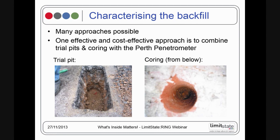Suppose we have to look inside our bridge — how do we do that? There are lots of ways: boreholes, trial pits, coring. One approach I've found very effective and cost-effective is to have a small number of trial pits and sometimes cores, used in conjunction with a very lightweight handheld penetrometer. For example, the PERF penetrometer is a portable piece of equipment used to identify the resistance of the soil.